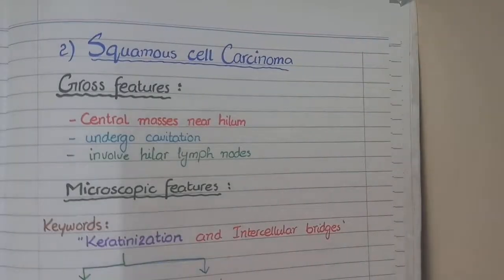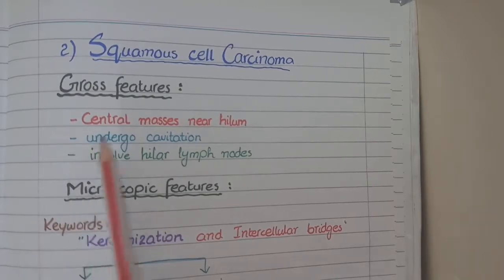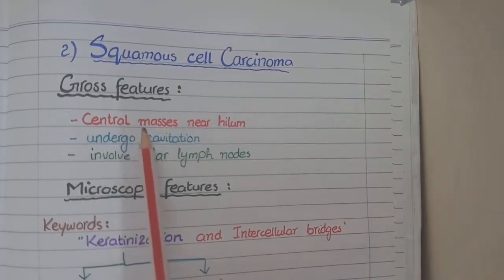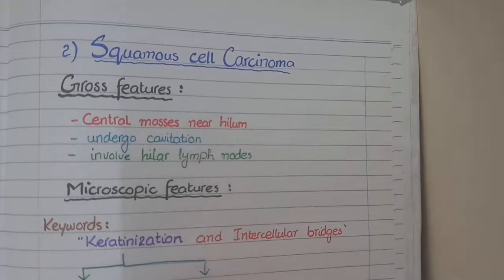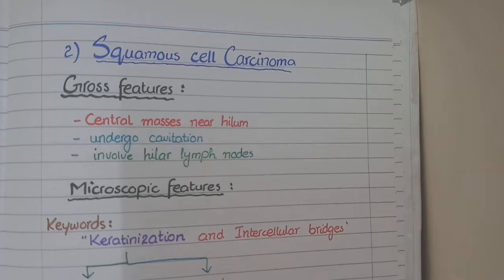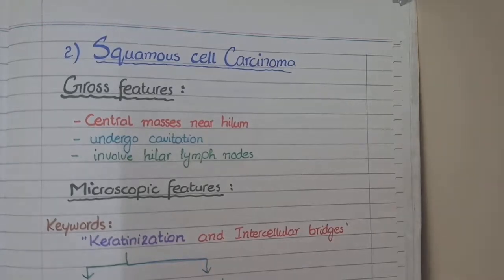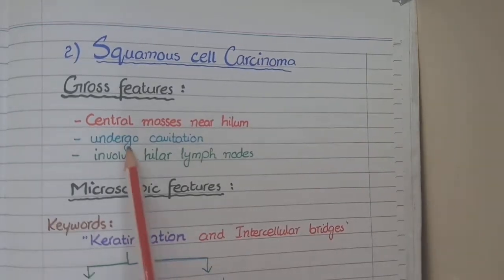Now we will look at the morphology of squamous cell carcinoma. On gross specimen, the tumors are in the form of masses that are central in position, meaning they are present close to the hilum of the lungs. Being central, these tumors occasionally erode the bronchi, and when they erode the bronchi, the necrotic material present in the tumors gets expectorated through the sputum, leaving a cavity in the tumor mass — this is called cavitation.